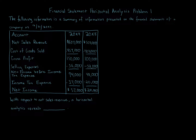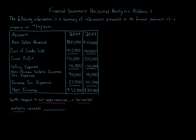With respect to net sales revenue, a horizontal analysis reveals the following. Horizontal analysis is the analysis of increases and decreases in the amount and percentage of comparative financial statement items. We're looking from one year to the other — specifically 20x9 compared to 20x8 — and we're focusing on the net sales revenue line.